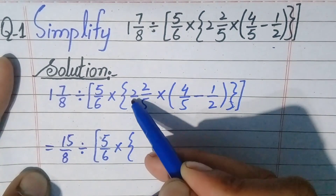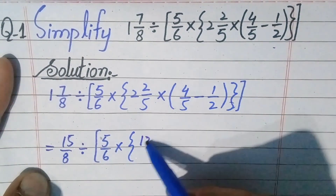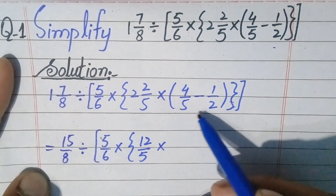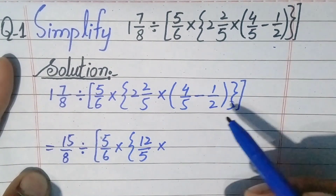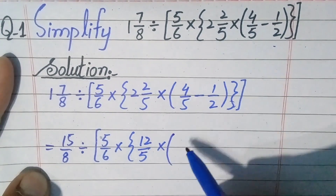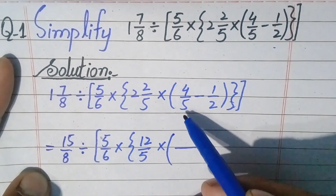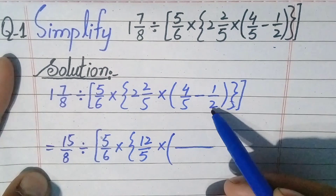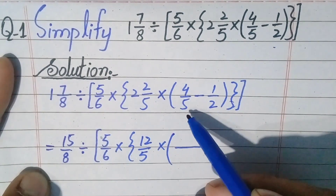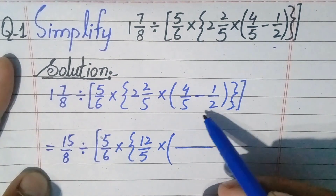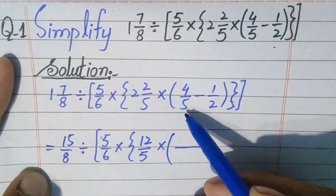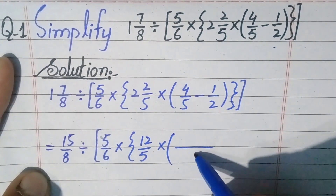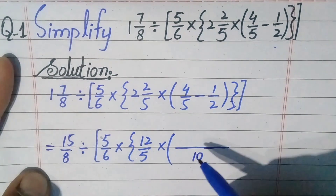Now we will simplify the subtraction of these two fractions inside the parentheses. We need to take the LCM of the denominators. Remember that these two numbers in the denominator are prime numbers, and the LCM of prime numbers is always their product. So the LCM of 5 and 2 is their product: 5 times 2 is 10, so the LCM is 10.